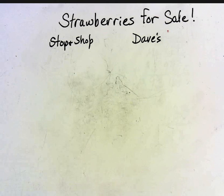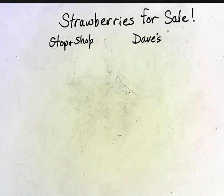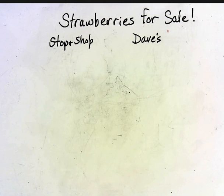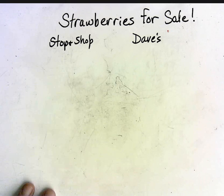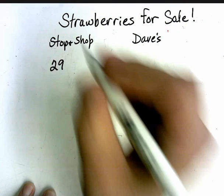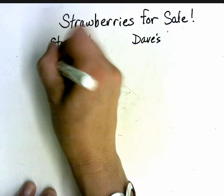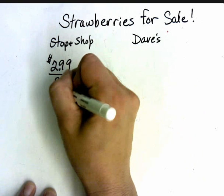Okay guys, we're going to look at strawberries on sale today and we're going to compare prices for strawberries at Stop and Shop and prices for strawberries at Dave's Market. Stop and Shop has strawberries on sale for $2.99 for two pounds.